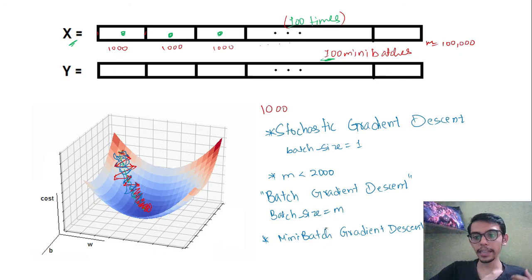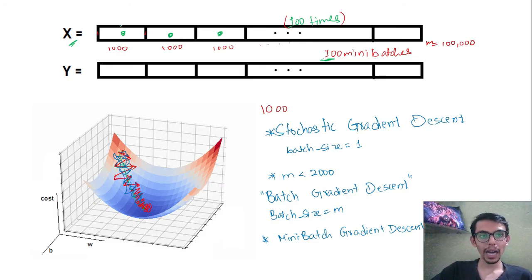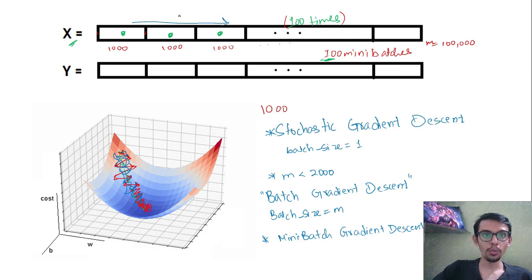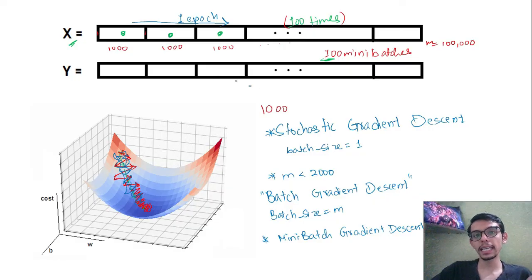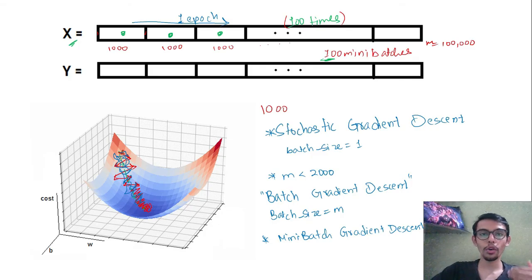In mini batch gradient descent, once we pass the entire dataset it is called one epoch. One epoch means we have passed the entire dataset once, and we train the model for many such epochs.